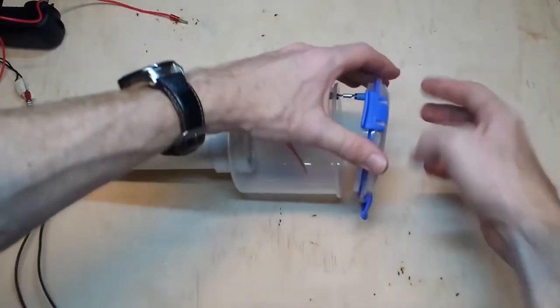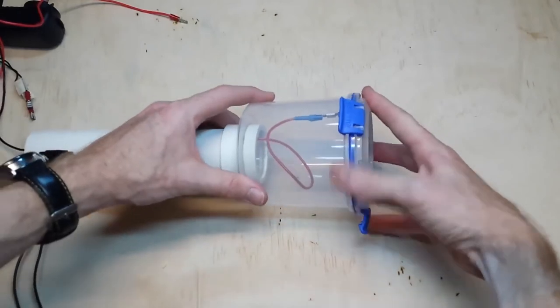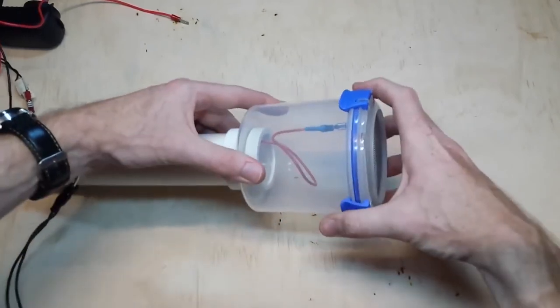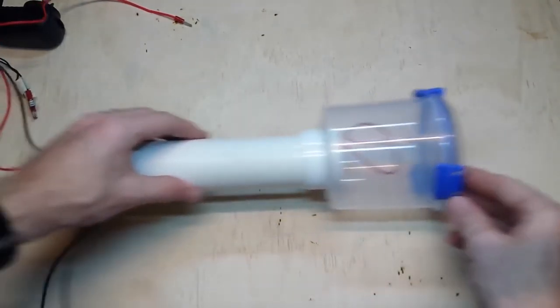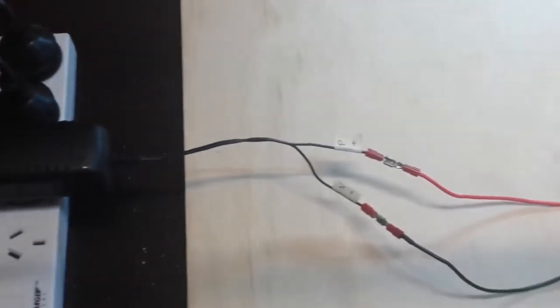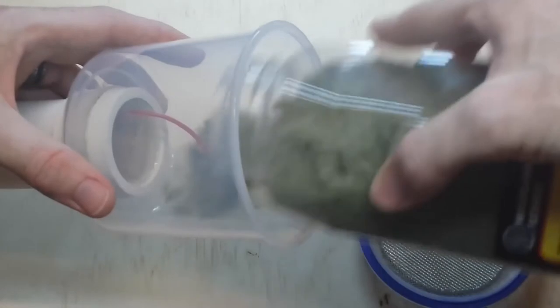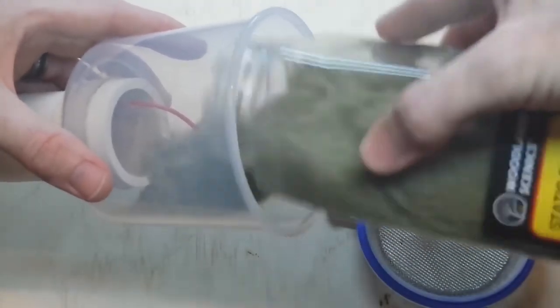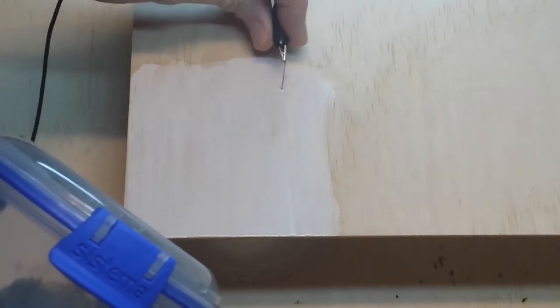I connect it to a 12 volts phone charger. Make sure the wires don't touch. Put some static grass in the container. Apply glue to the area you plan on grassing. Push a pin into the glue. Attach the alligator clip to the pin. Turn it on, and shake.